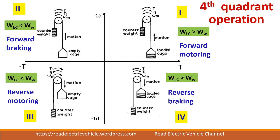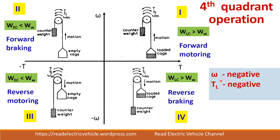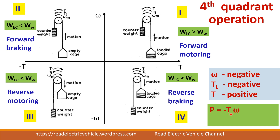In the fourth quadrant, we move the loaded cage from top to bottom. Since the loaded cage is heavier, the load torque acts in the downward direction. Speed is in the reverse (negative) direction. The motor torque acts in the opposite direction to prevent the cage from falling too quickly. Here ω is negative and T is positive, so power P = ω × T is negative — this is reverse braking.